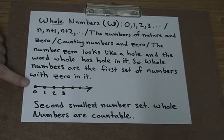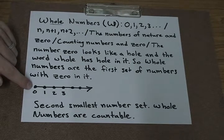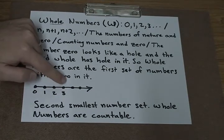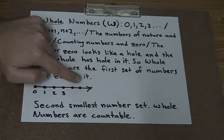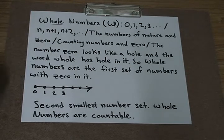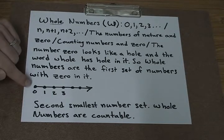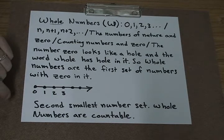The number line looks like a normal number line, but it starts at 0, 1, 2, 3, as far as we can count. The arrow represents that it continues on forever. However, this is the second smallest number set, and since we can count it, whole numbers are countable.